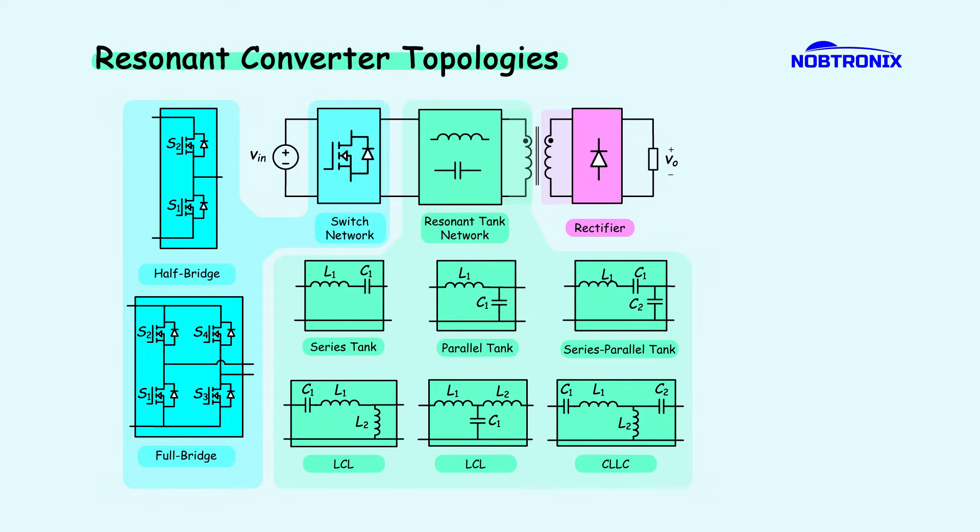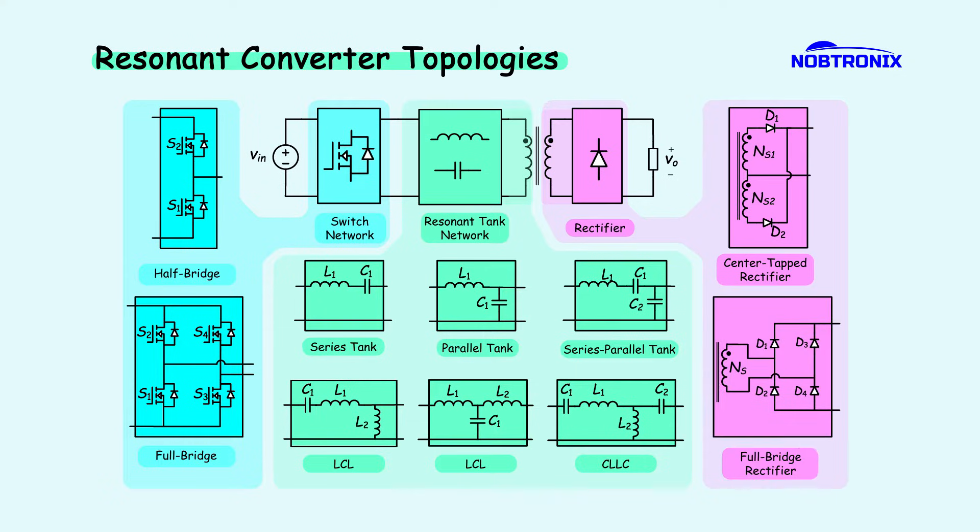Also, different rectifier arrangements can be used in the output stage. Common examples include a center-tapped rectifier or a full-bridge rectifier, depending on the design requirement. This configuration influences efficiency, power density, and overall performance, making the choice of topology a crucial aspect of resonant converter design.